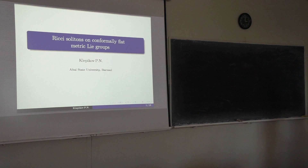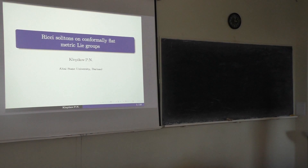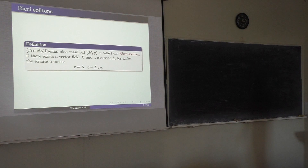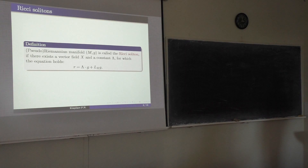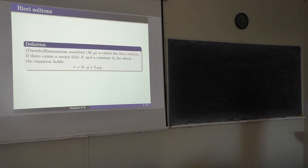In recent years, various generalizations of Einstein's metrics have been studied. One of them is the Ricci soliton. A Riemannian manifold is called a Ricci soliton if there exists some vector field X and some real constant lambda for which the equation holds, where R is the Ricci tensor, G is the metric tensor, and L_X(G) is the Lie derivative of the metric tensor.